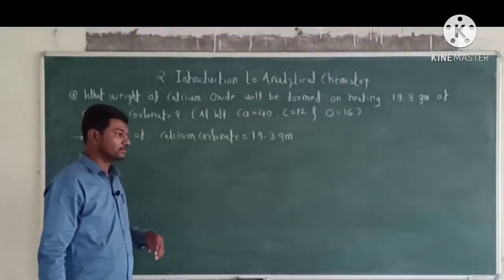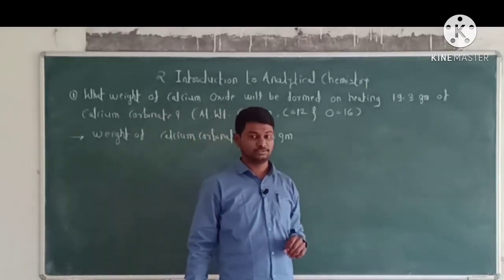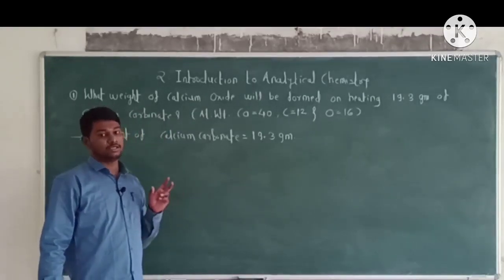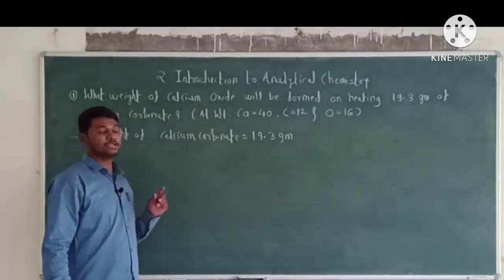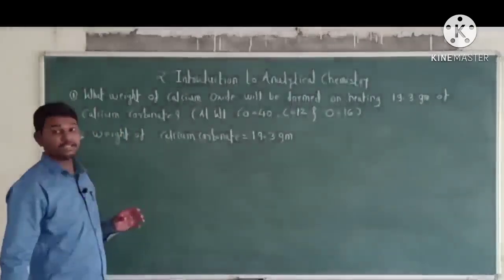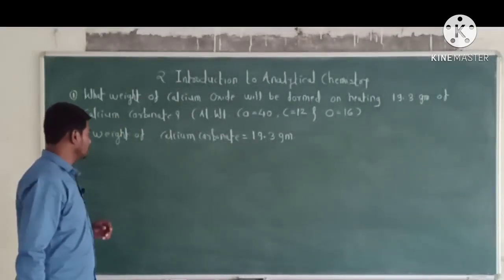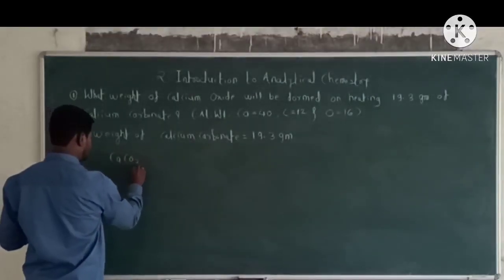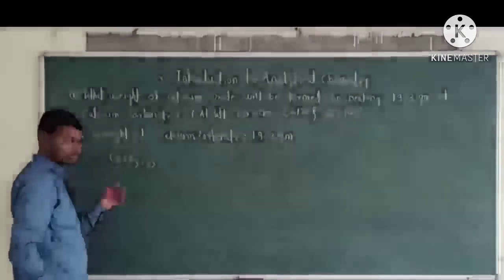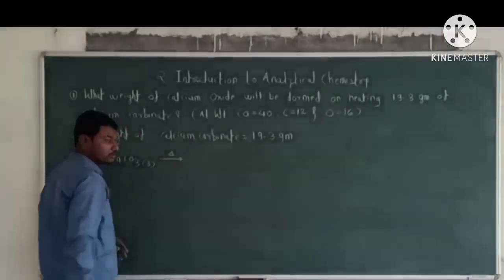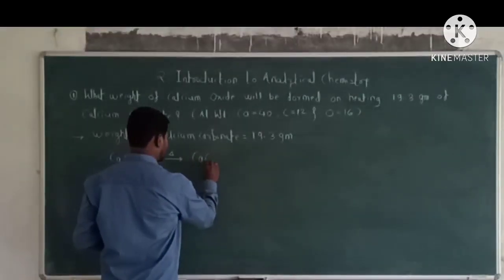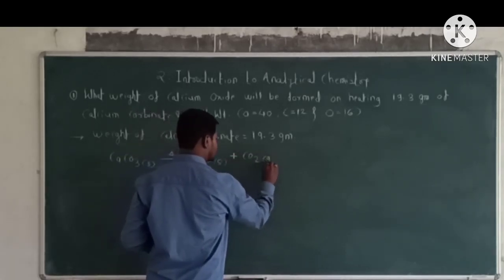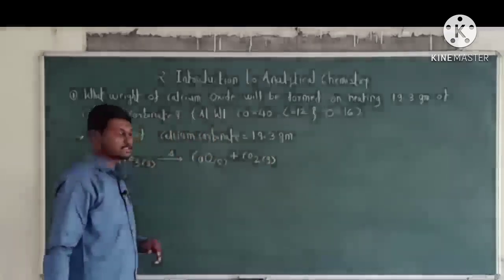Step 1: Write down the balanced chemical equation representing the chemical reaction. The balanced equation is: solid calcium carbonate heated gives solid calcium oxide plus gaseous carbon dioxide. CaCO₃(s) → CaO(s) + CO₂(g).